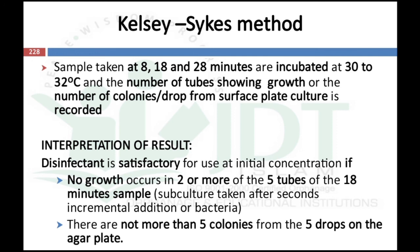The number of tubes showing growth, or number of colonies per drop on the surface plate, is recorded. The disinfectant is considered satisfactory for use at the initial concentration if no growth occurs in 2 or more of the 5 tubes of the 18-minute sample, or there are not more than 5 colonies from 5 drops on the agar plate.